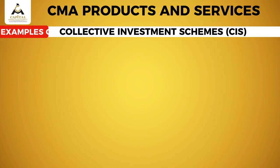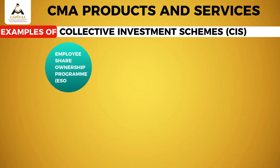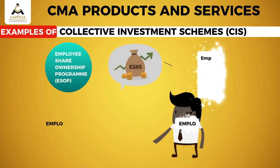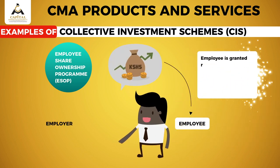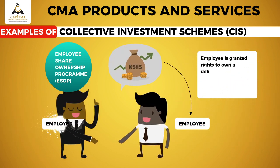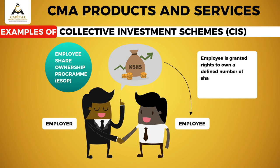Another example of a collective investment scheme is the employee share ownership program. Here, an employee is granted rights to own a defined number of shares in the company, usually at a discounted price.